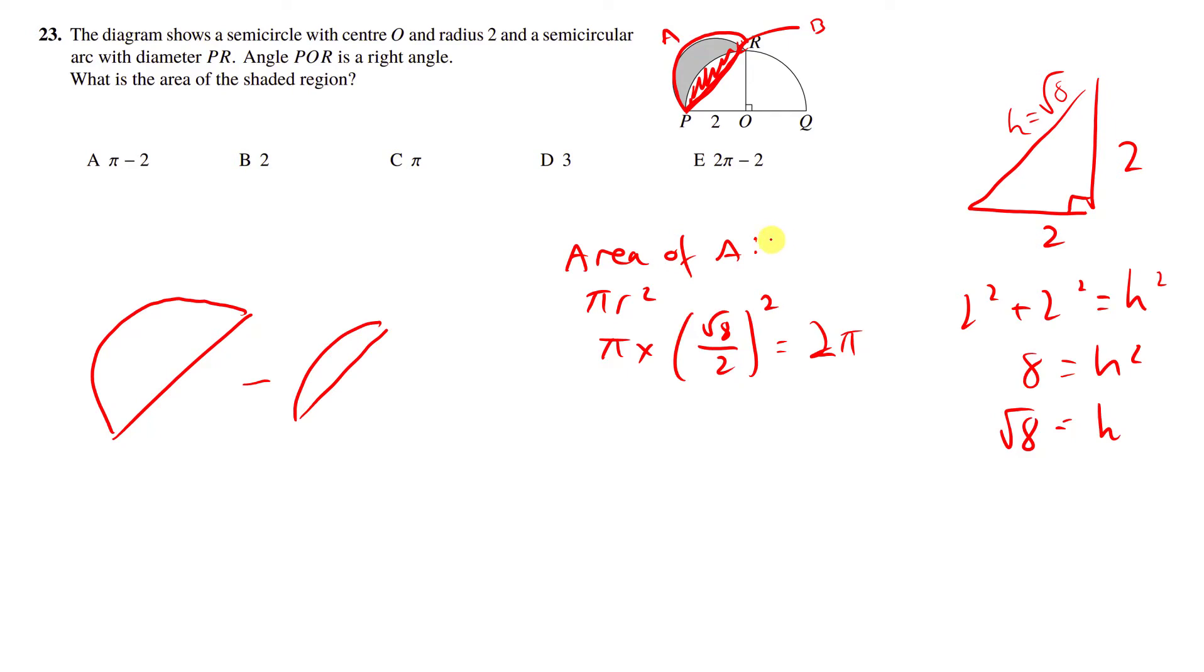But the area of A, so this is the area of A if it was a circle, but the area of A is 2 pi divided by 2, which is just pi. So this bit is pi.